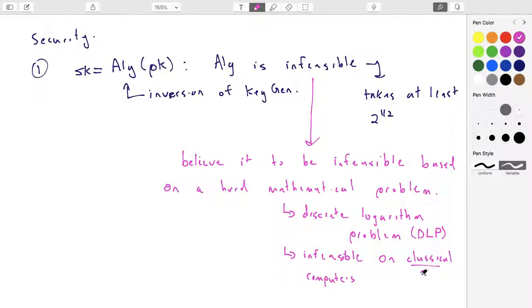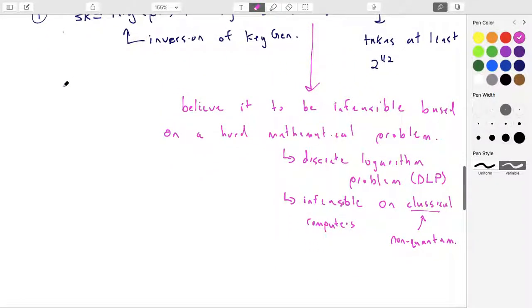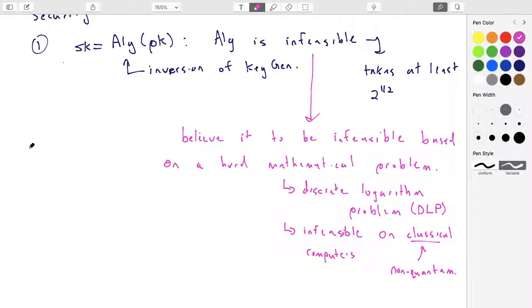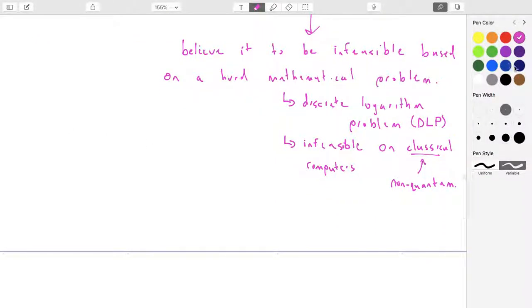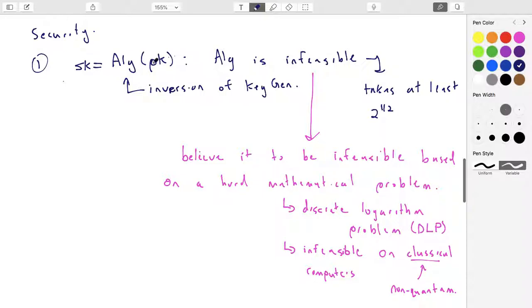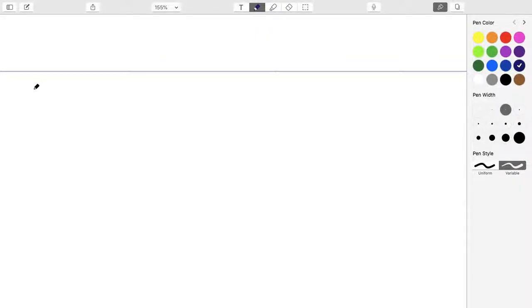Classical means not quantum. Infeasible means that if you take all the classical computers in the world and get them all working on solving one secret key based on one public key, and you run them for the lifetime of the universe, you're not going to find the answer. Or at least it would be very high probability that you're not going to find the answer. So that's what we mean by infeasible. So now we have, it's safe to publish our public keys, and people can't figure out what our secret keys are.